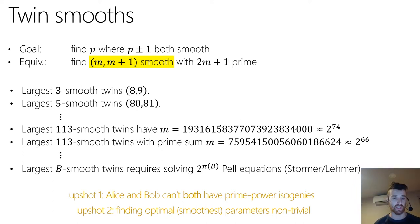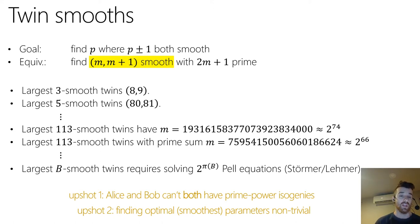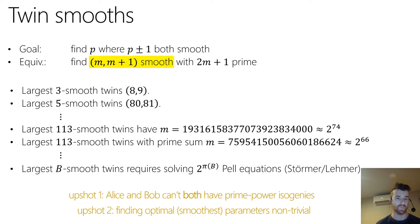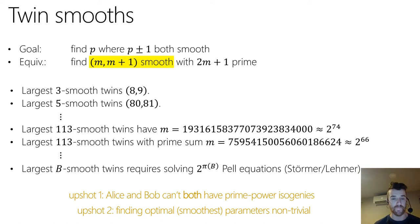It turns out it is rather difficult to find primes of cryptographic size with p±1 very smooth. Starting with the largest 3-smooth twins: those are 8 and 9, with sum 17 — the prime we saw on the previous slide. The largest 5-smooth twins are 80 and 81, and again their sum is prime, though in general that won't be the case.